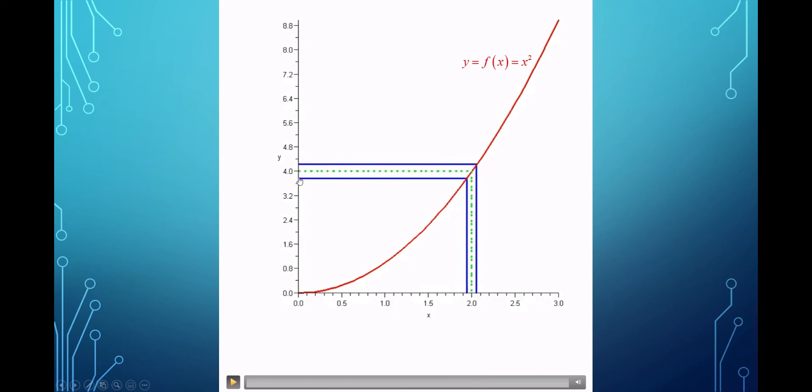for any interval around your limiting value of 4, any l minus epsilon to l plus epsilon, in this case 4 minus epsilon to 4 plus epsilon, all you need is one interval small enough over here. So it doesn't have to be as big as what's pictured. It's going to be smaller. For sure.